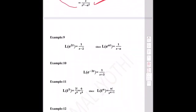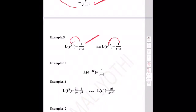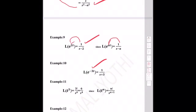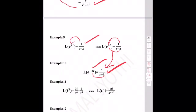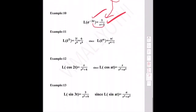Quick examples applying the formulas: L{e^(2t)} = 1/(s−2). L{e^(−3t)} = 1/(s+3), since a = −3 gives s − (−3) = s + 3. L{t³}: using L{t^n} = n!/s^(n+1), L{t³} = 3!/s⁴ = 6/s⁴.